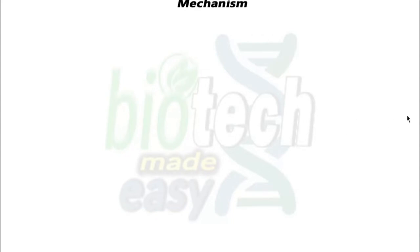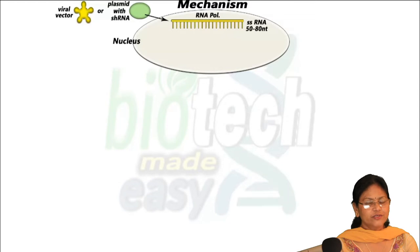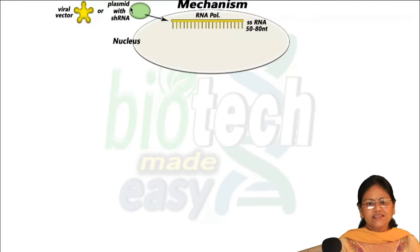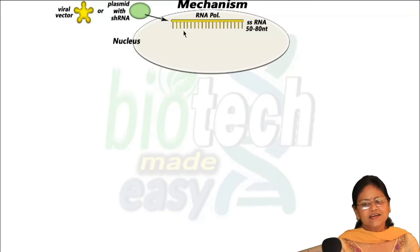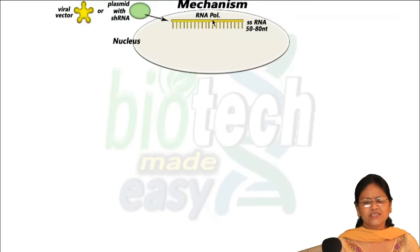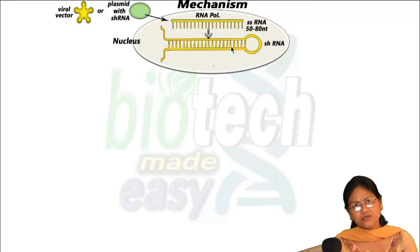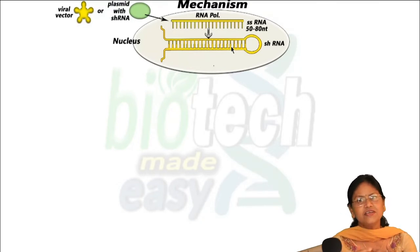Now let's talk about the mechanism. Since shRNA is not endogenous, it is synthesized and introduced from outside with the help of plasmid DNA. The shRNA transcript is introduced into the nucleus. Here you can see the single-stranded RNA molecule which is around 50 to 80 nucleotides long. RNA polymerase initiates the whole process in the nucleus and the shRNA is formed because there are complementary regions that pair with each other.